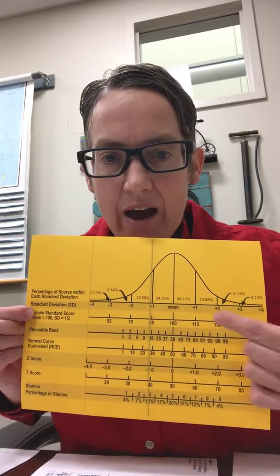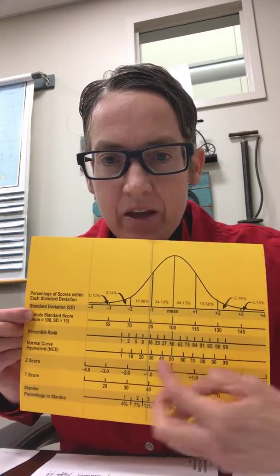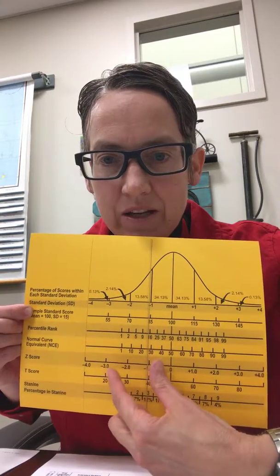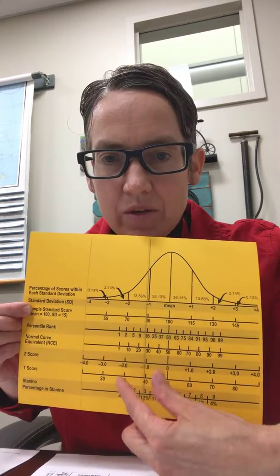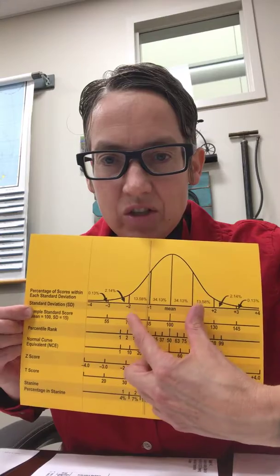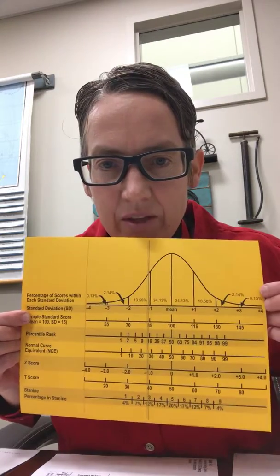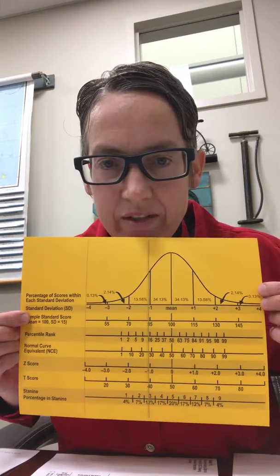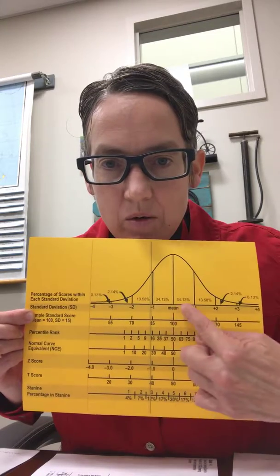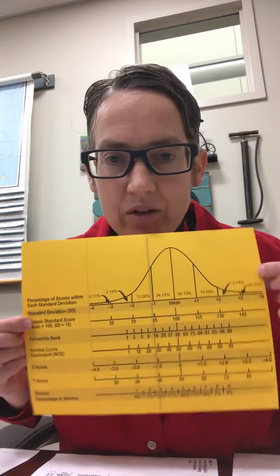You can use percentile rank, Z scores, T scores, you can even use standard deviation. Jane Smith is almost one standard deviation above the mean, right there. You have a copy of this.